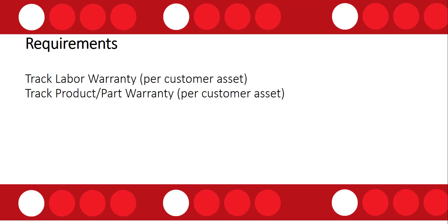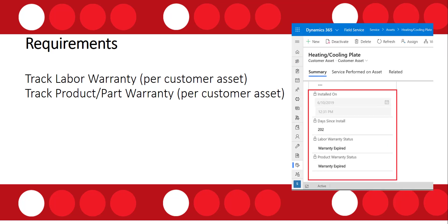Most of you probably know that we can configure whether or not a work order product needs to be turned into a customer asset when a field technician consumes a work order product. But what if we needed to track if that customer asset was still under warranty or not? In this video I'm going to configure the application to track two different types of warranty on customer assets — one to track labor associated with when the asset was installed, and one related to the part that was installed.